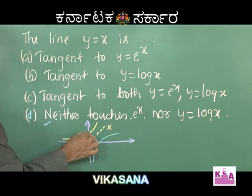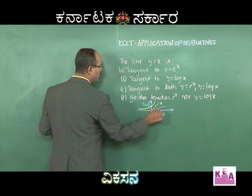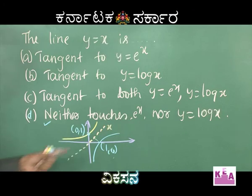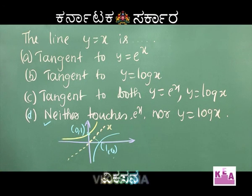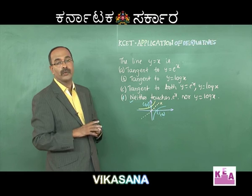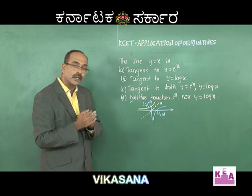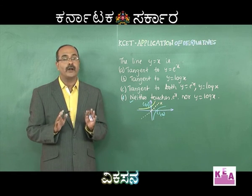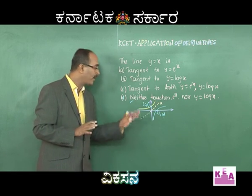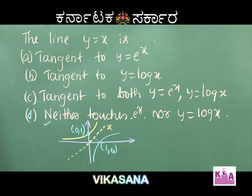This point is (0,1) and this point is (1,0). These two points are equidistant from y = x. So the curves y = log x and y = eˣ are equidistant from y = x. And y = x will not cut or touch the curves y = log x and y = eˣ.